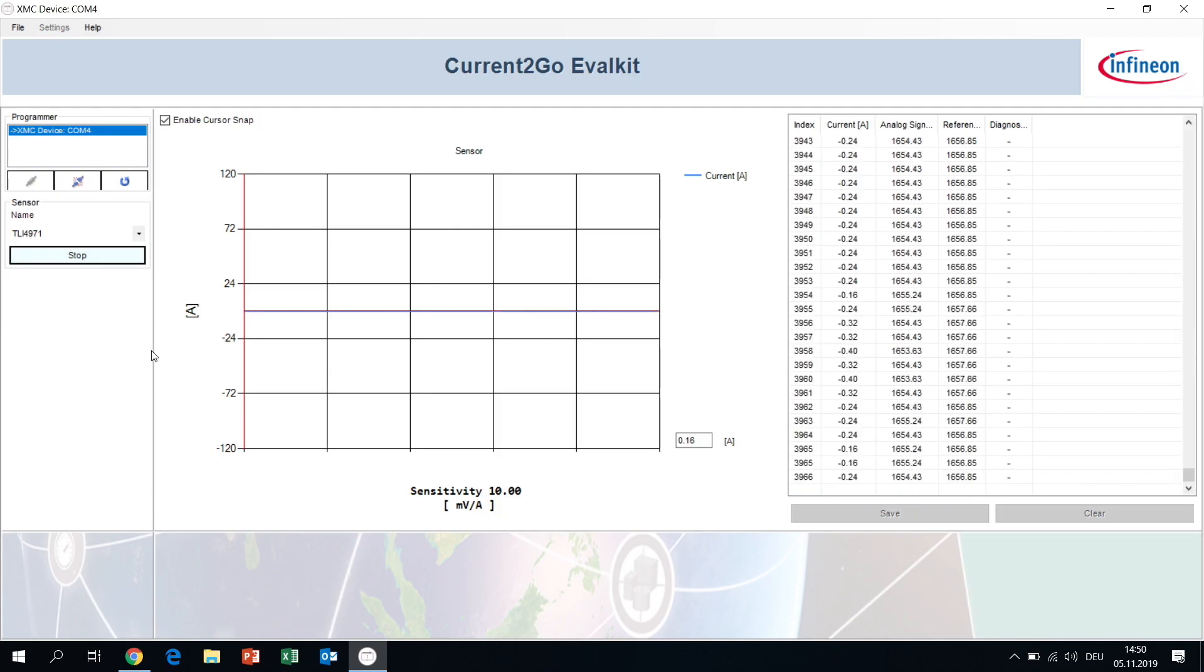When you receive data from the sensor you can set cursors and see the current at this position. If you stop the data receiving then you can as well select other data points. You see the current value here.